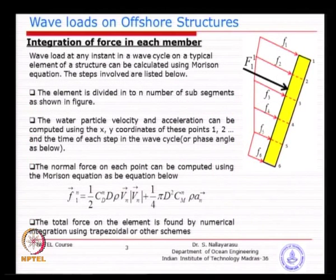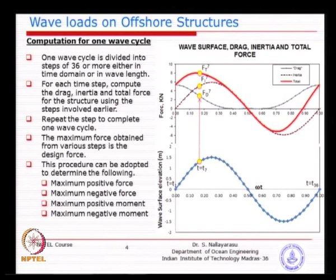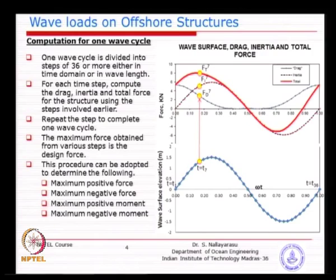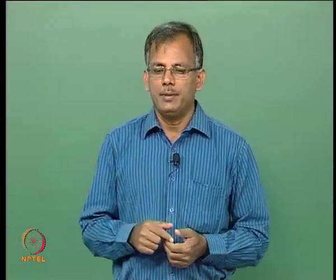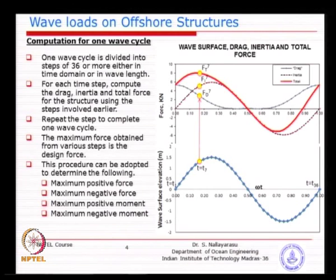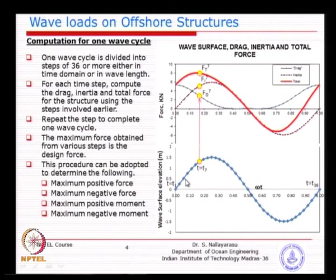After doing one time step, you go to the next time step - starting with T equal to 0, T1, T2, T3 until the full cycle is completed. For example, if you have a wave of 10 seconds divided into 72 steps, then 10 divided by 72 is the time step. The lower portion of this picture shows the wave profile, a simple wave profile divided into so many time steps, each blue point representing a time step.